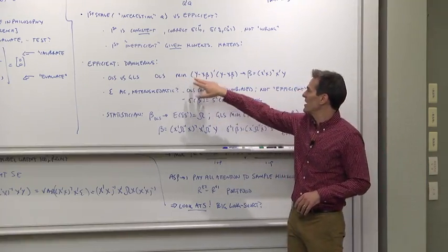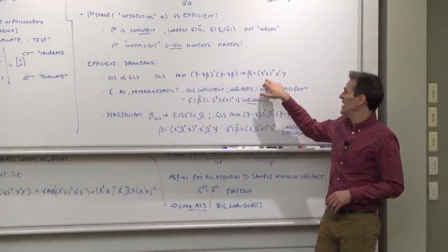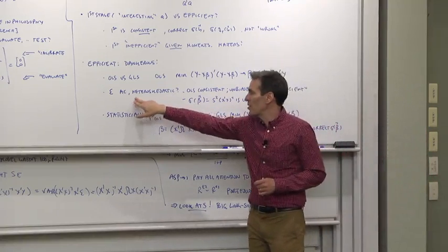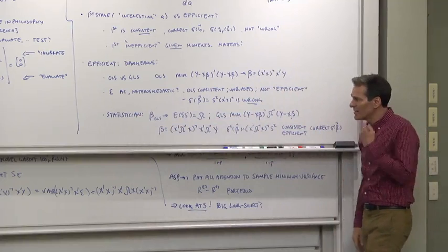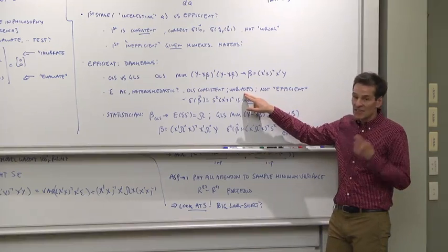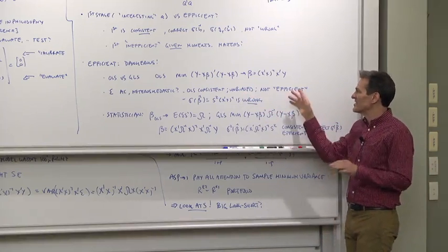In OLS, we minimize the sum of squared errors, and that leads to the OLS estimator. Oh, you say, wait a minute. What if the errors are autocorrelated and heteroscedastic? Well, still, OLS is consistent and unbiased. There's nothing wrong with the OLS estimate. It's just not efficient enough.